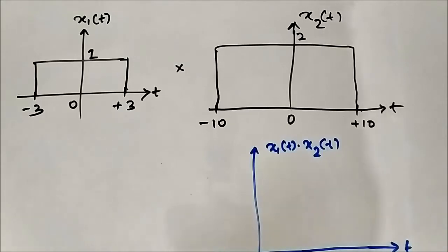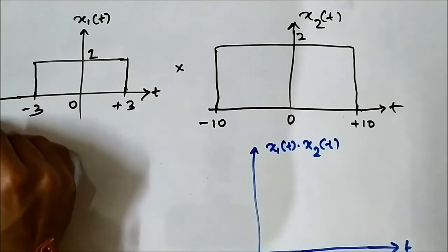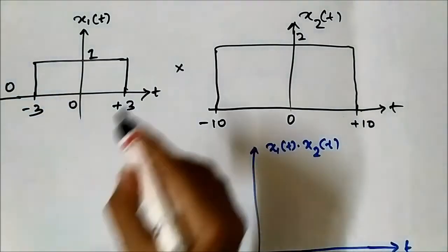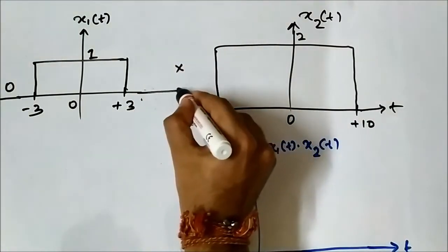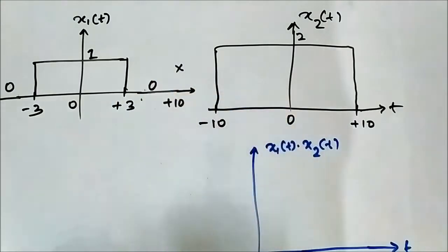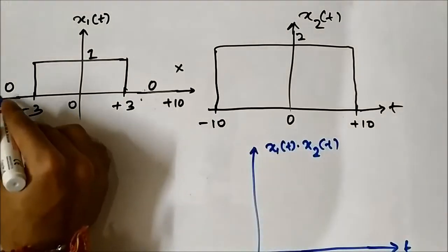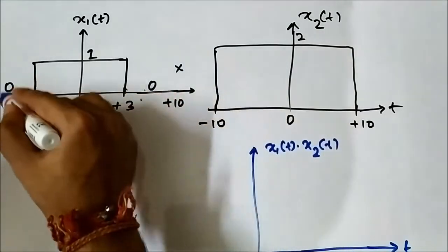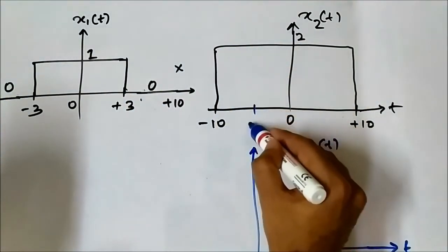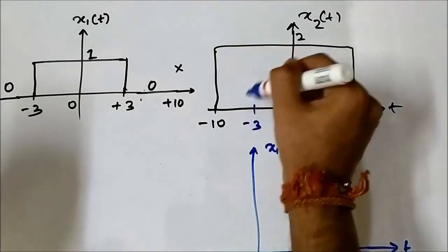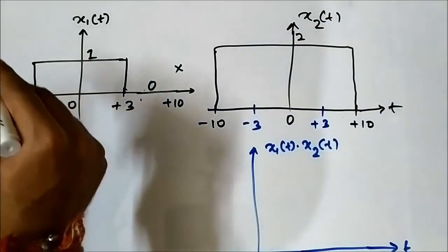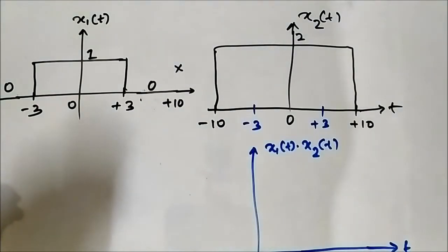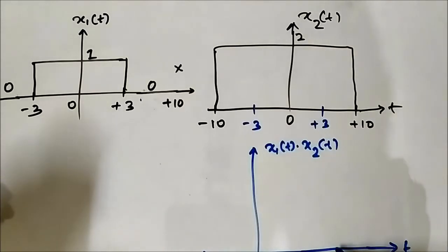The first signal from minus 10 to minus 3 has a value of 0, and extending to plus 10 it also has a value of 0. In the output, from minus 10 to minus 3 and from plus 3 to plus 10, one of the amplitude values is 0. So 0 multiplied with anything — even though x2(t) has amplitude 2 — will give us 0.